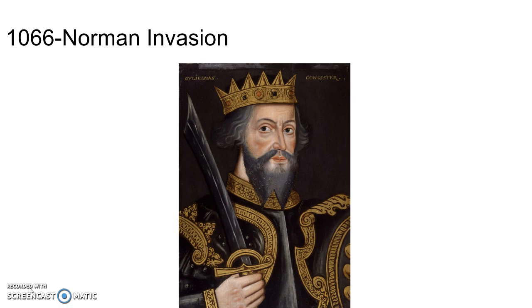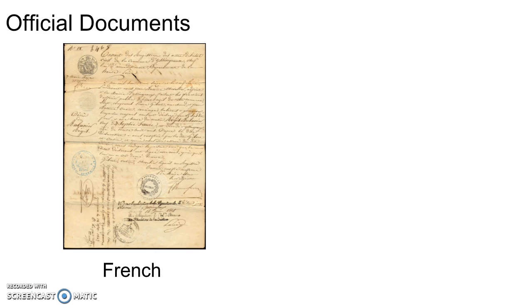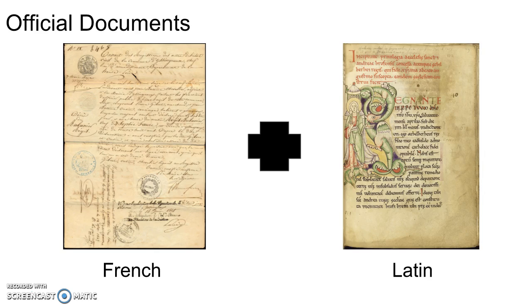In 1066 CE, the Normans invaded England. William, the Duke of Normandy, declared himself king. Since he was from Normandy, he only spoke French, and because of this, the language of the upper class started to change to French. In this time, almost all documents were written in French, because only the upper class had the ability and the time to write things down. There are also many documents written in Latin, because while the rich people's language changed to French, the scientific language was still Latin.